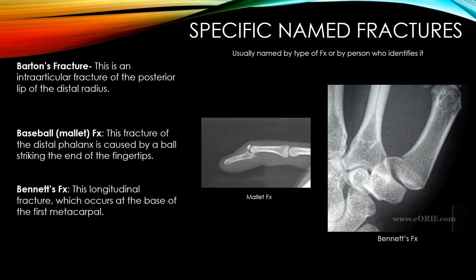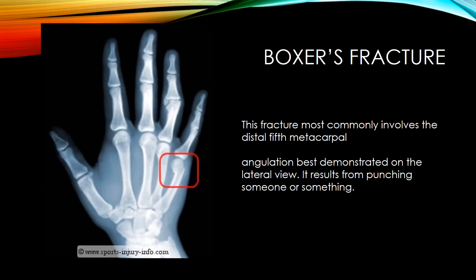Specific named fractures are usually named by the fracture type or by the person who identified it. Barton's fracture is an intra-articular fracture of the posterior lip of the distal radius. A baseball or mallet fracture is a fracture of the distal phalanx caused by a ball striking the end of the fingertips. Bennett's fracture is a longitudinal fracture occurring at the base of the first metacarpal. A Boxer's fracture most commonly involves the distal fifth metacarpal, with angulation best demonstrated on the lateral view, and results from punching someone or something.